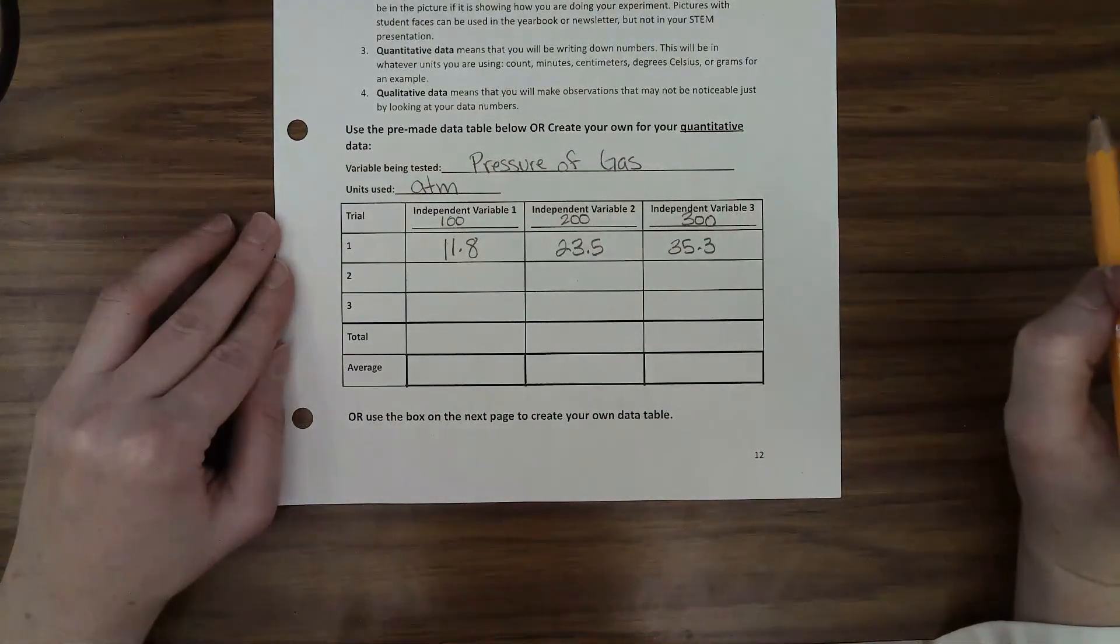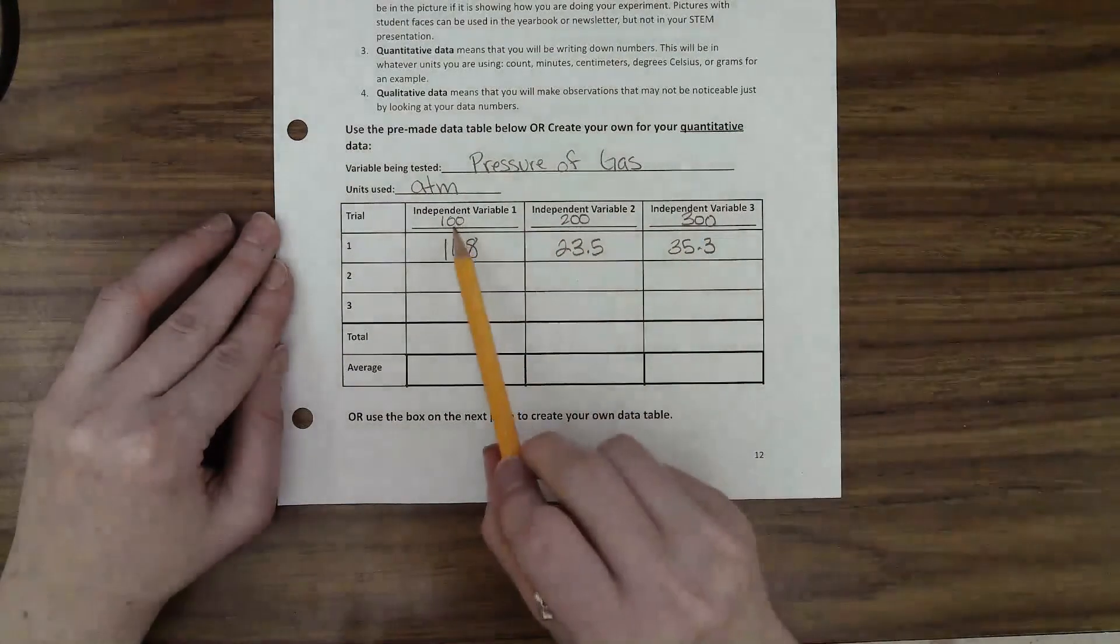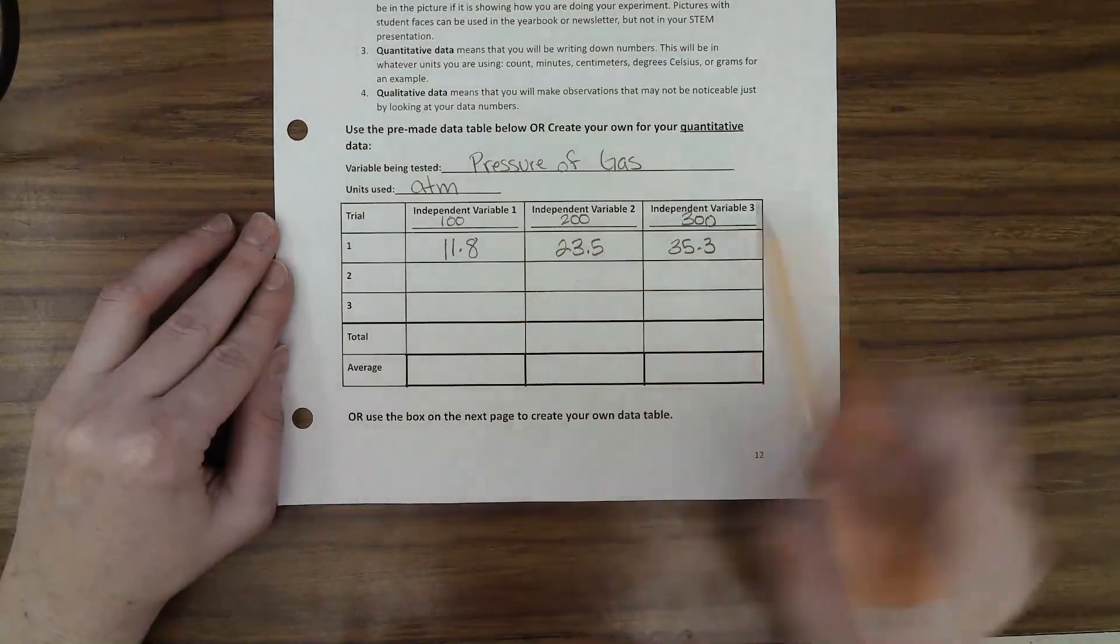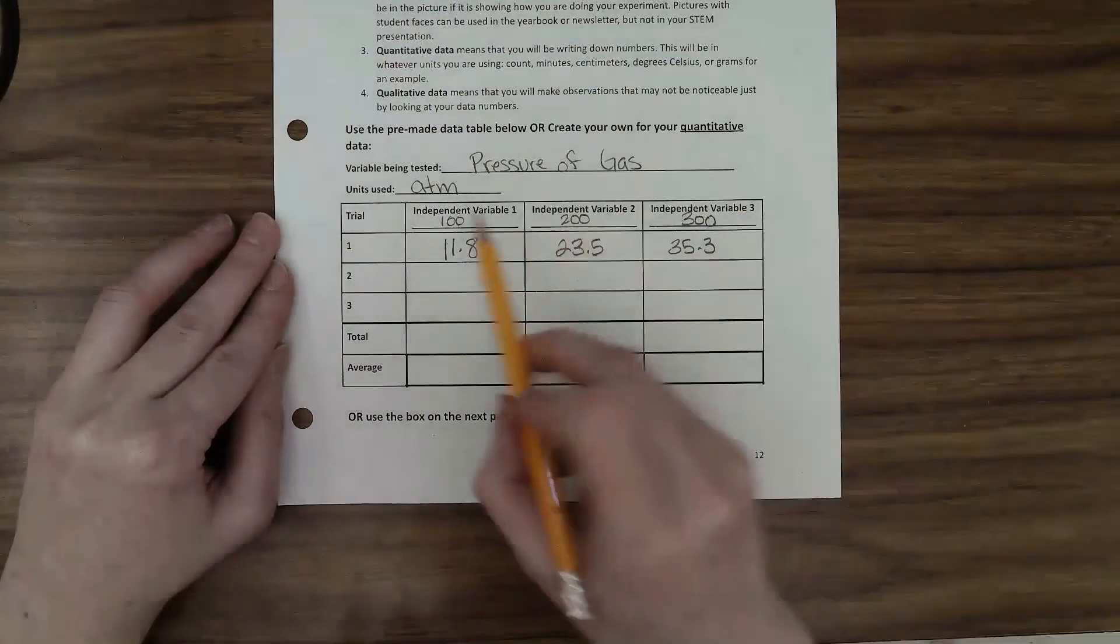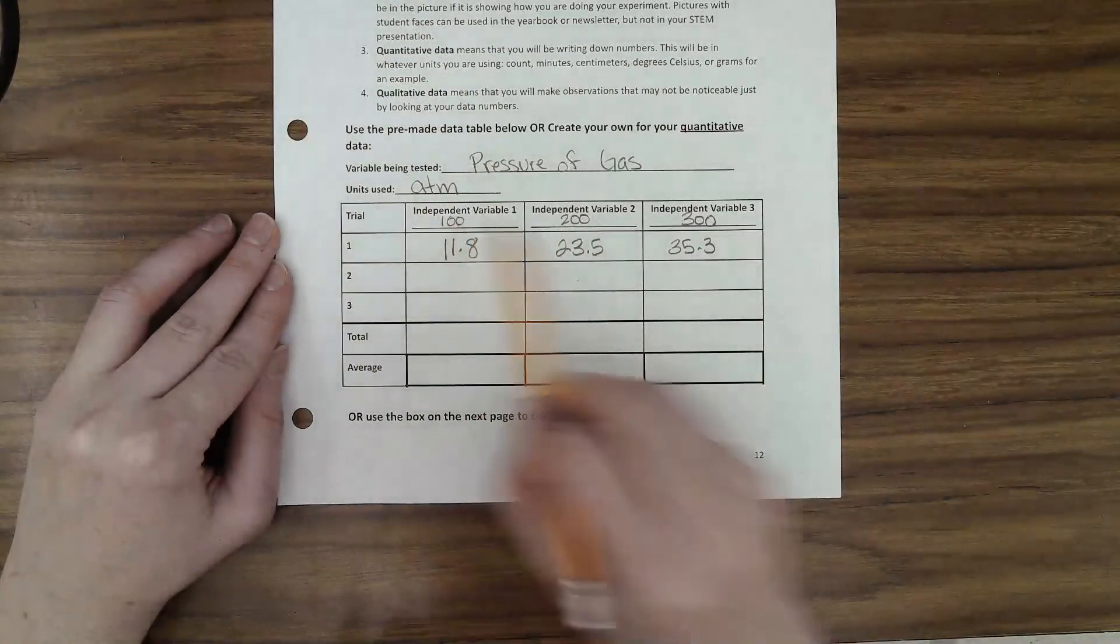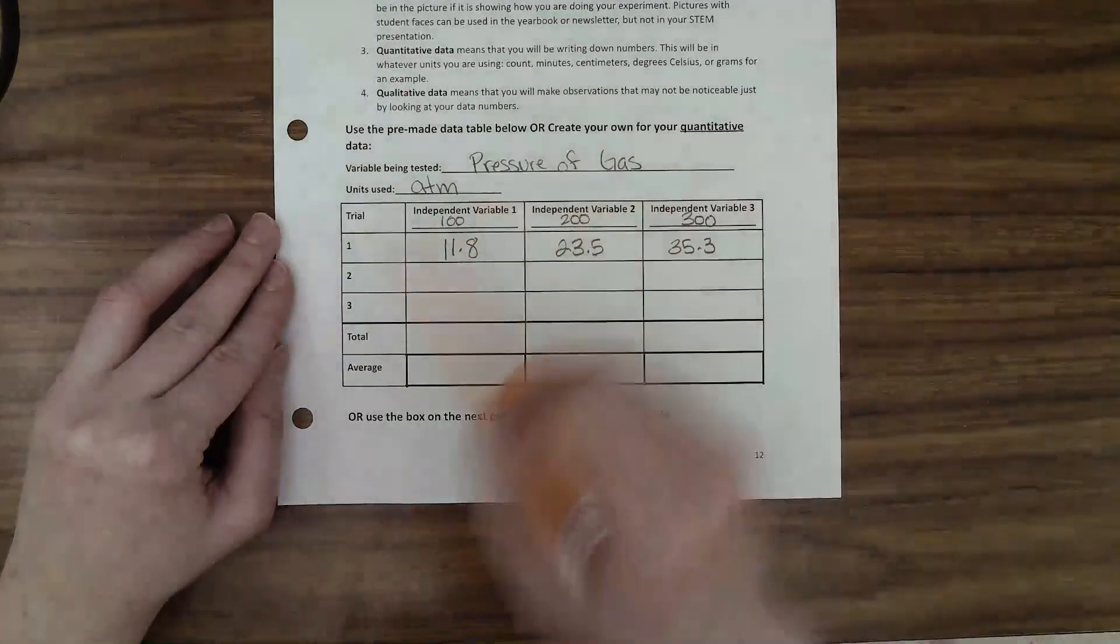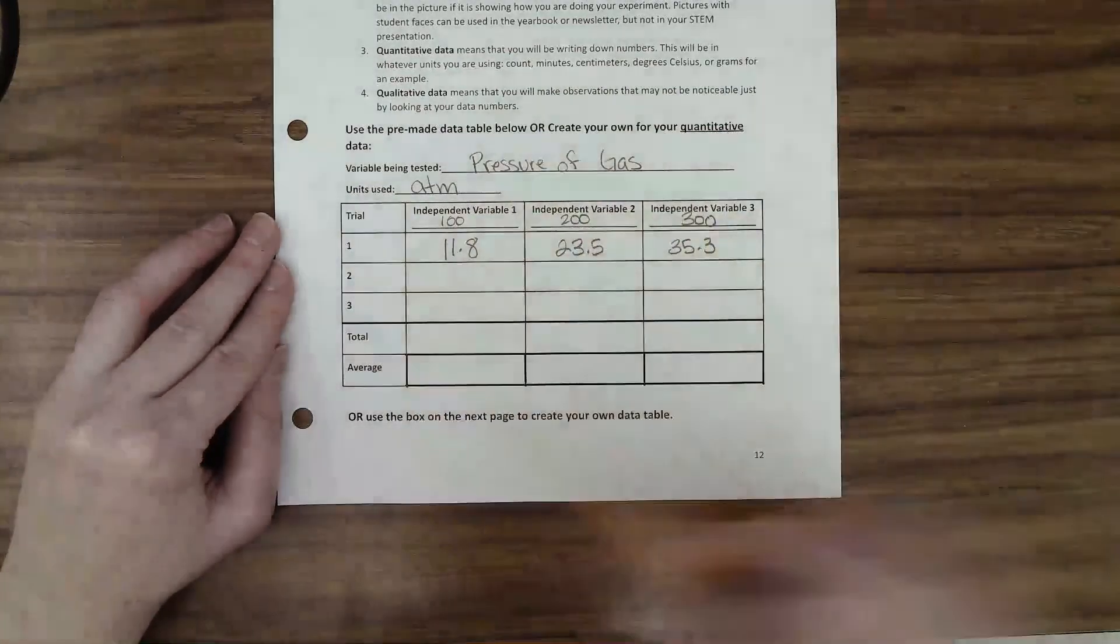Now if you are doing a different variable besides the number of particles, you'll do the same thing I did. You'll just change number of particles to whatever the variable is that you chose and you'll fill out your data table.